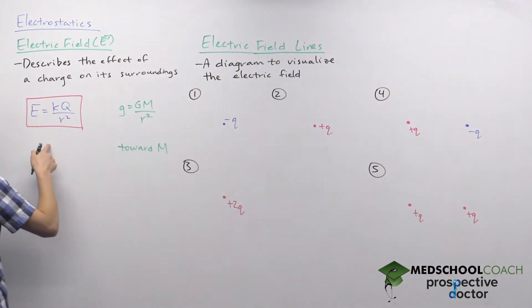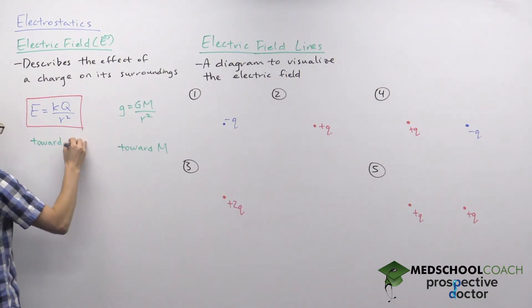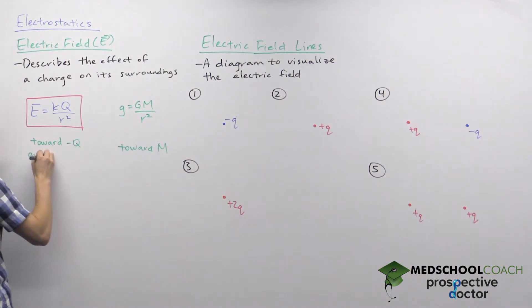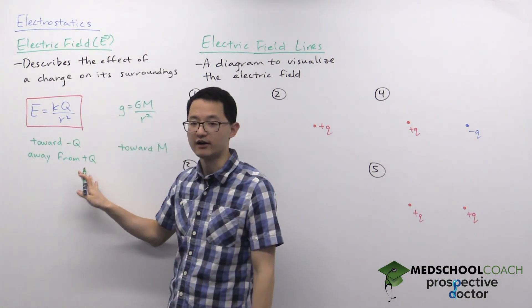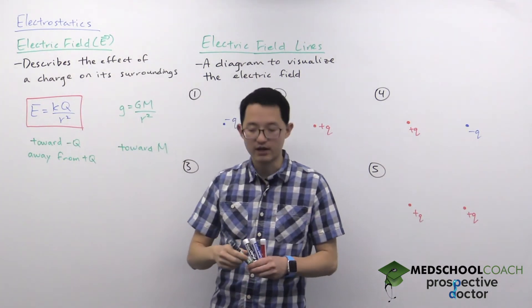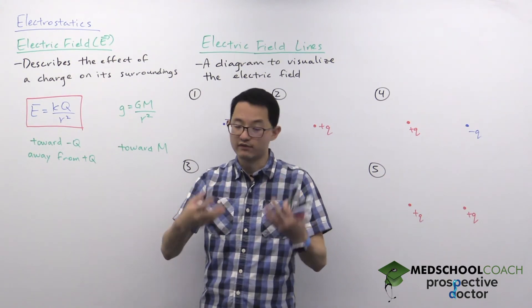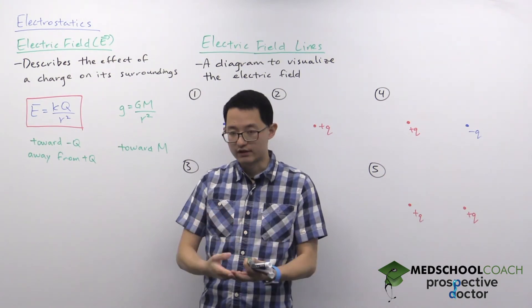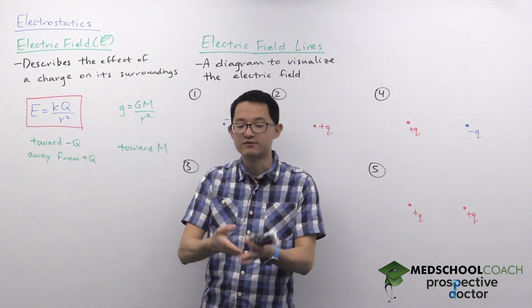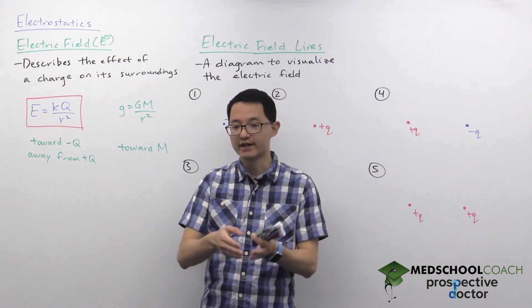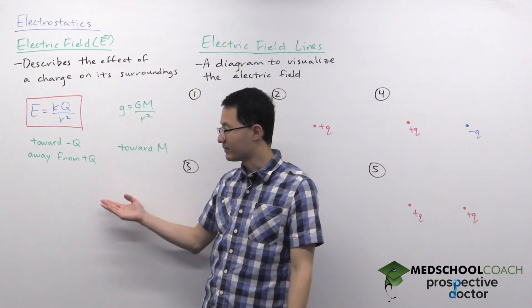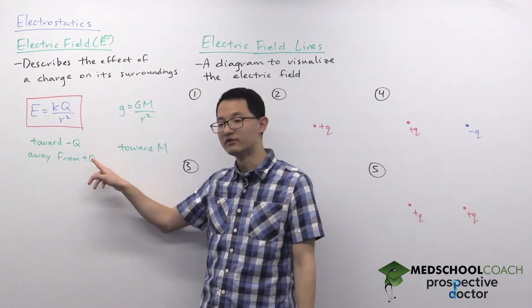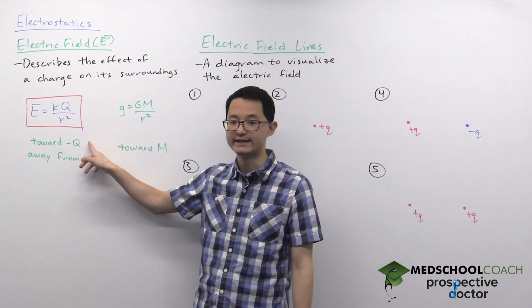For the electric field, the direction is going to be toward negative charges and away from positive charges. This definition comes from placing a positive test charge at a certain position — whichever direction that positive test charge moves is the direction of the electric field. It just so happens that positive test charges move away from positive charges and toward negative charges.